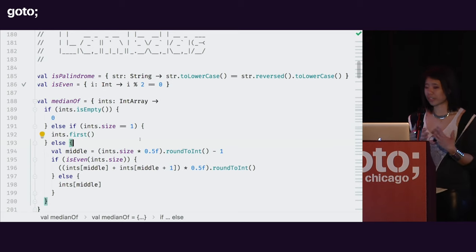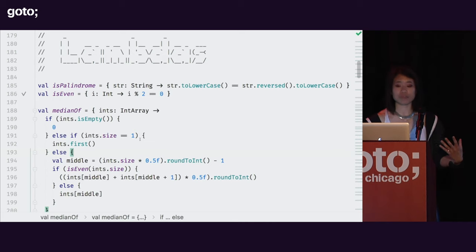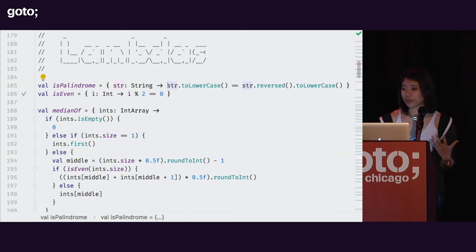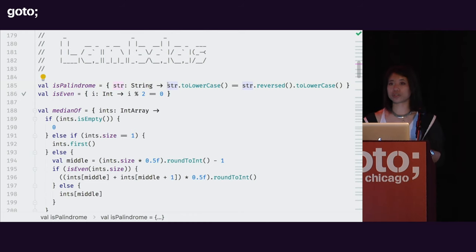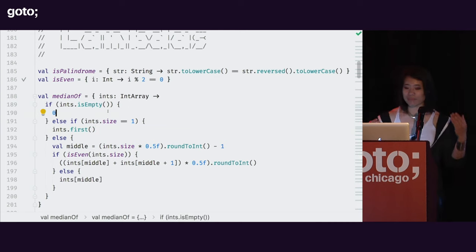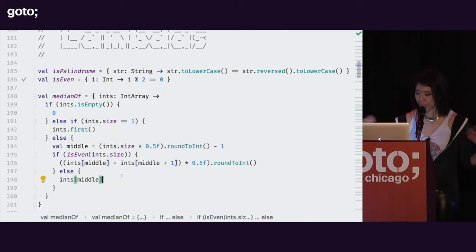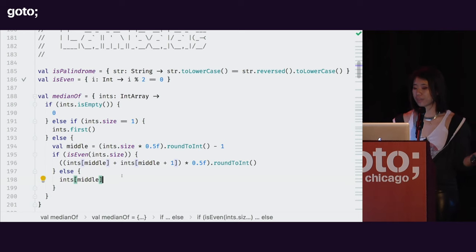There's no return type in lambdas. Usually when we declare functions in Java or C++-type languages we specify return type, but lambdas don't have return types. Generally what happens is they infer the return type based on the last evaluated expression. In my first two functions they have a single line evaluating some equality, so the return type is a Boolean. In my median-of lambda it's more complicated — depending on which branch I take I return either a zero if the array is empty, first if it only has one, and some other evaluations. The Kotlin compiler infers based on the common type of these possible return expressions what the return type of that function literal is.